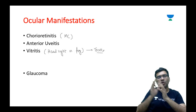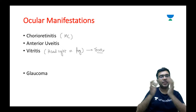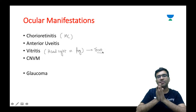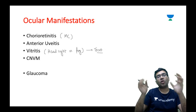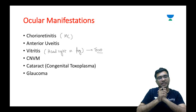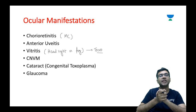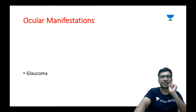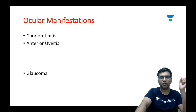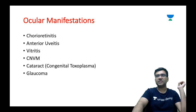Sometimes, because of its predisposition to the macular area, toxoplasma can cause a CNVM — choroidal neovascular membrane. In congenital toxoplasma it can be an important cause of congenital cataract. Rarely it can cause glaucoma as well, because uveitis can cause blockage of the trabecular meshwork leading to increased intraocular pressure. To revise: most common manifestation is chorioretinitis, followed by anterior uveitis, vitritis, choroidal neovascular membrane, cataract, and glaucoma.